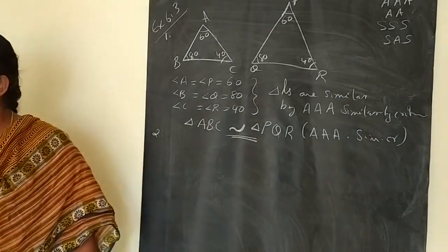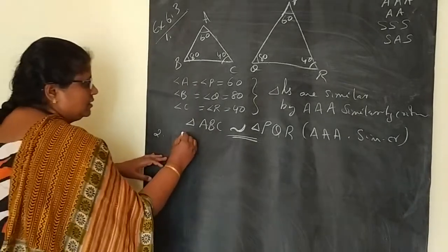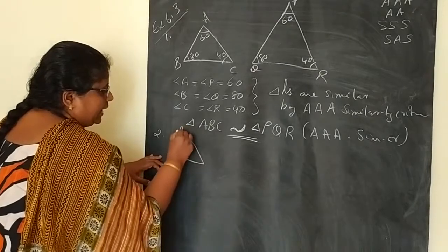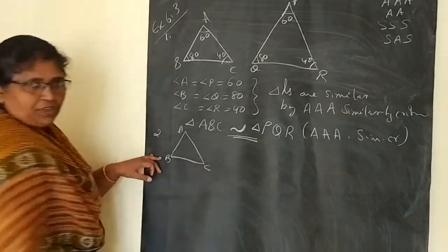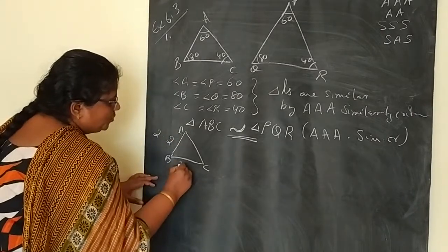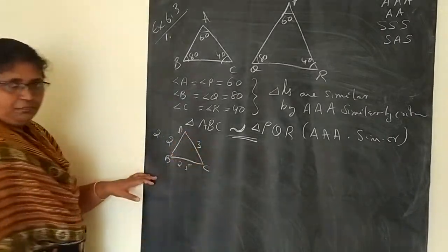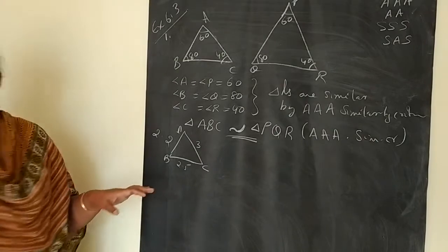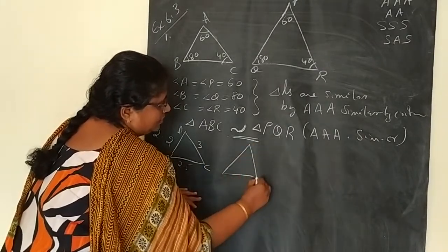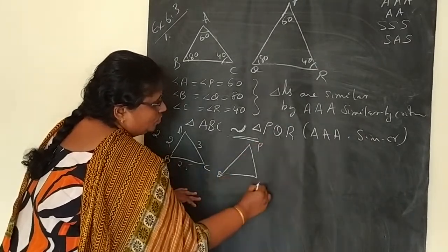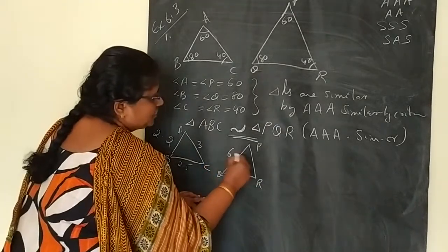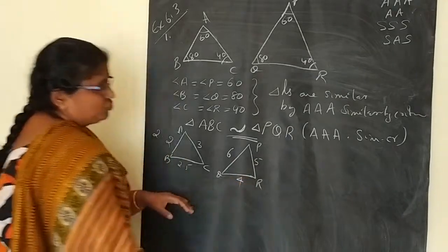Now we will take the second question. One triangle is given — ABC — with measurements 2, 2.5, and 3. And another triangle PQR is given with measurements 6, 5, and 4.